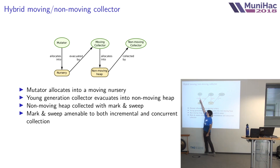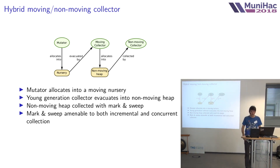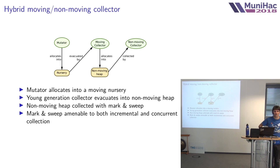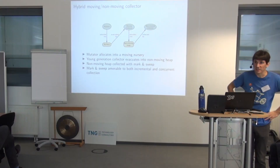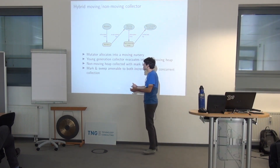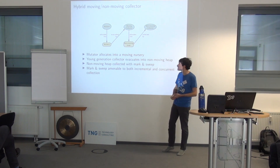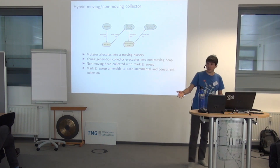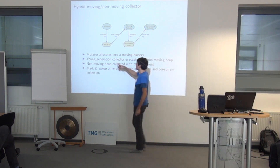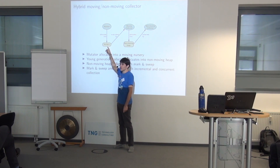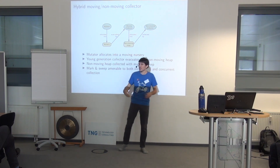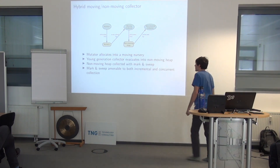The idea is most garbage your program generates dies relatively quickly, so we get all the advantages of a moving nursery for that data. For values that persist, we have the advantage of collecting them via a non-moving collector, which is much more readily made concurrent. Data begins when the mutator allocates into the moving nursery, then is evacuated by the moving collector into the non-moving heap, which is then collected by a non-moving collector. Importantly, the pause time of the minor collection is bounded because the nursery itself is bounded at a few hundred KB.